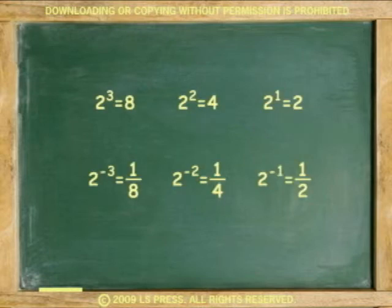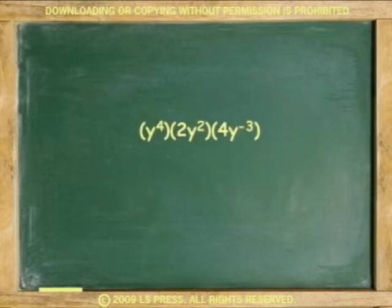Beyond the exponent 0, the negative exponents turn into fractions as a mirror image. So that 2 to the 3rd is 8, and 2 to the negative 3rd is 1 over 8. 2 squared is 4, and 2 to the negative 2 is 1 over 4. 2 to the 1 is 2, and 2 to the negative 1 is 1 over 2, and so on.